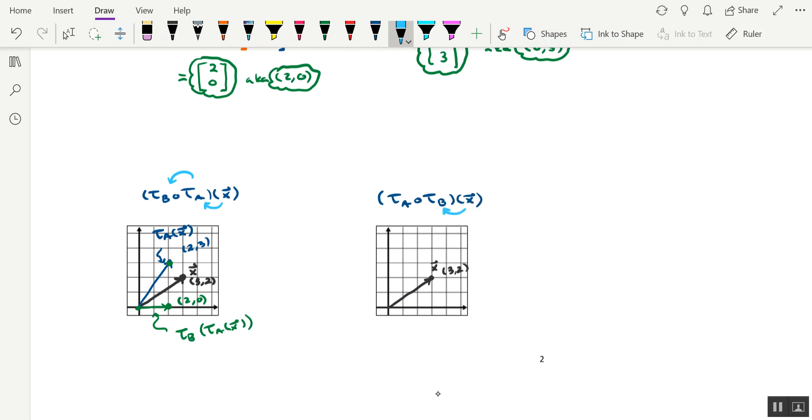The first transformation to take place is capital T sub B, which is an orthogonal projection onto the x-axis. So we're going to take this point right here and basically body slam it down onto the x-axis. That's at 3 comma 0 right now. And this is what the vector would look like. And that vector corresponds to T sub B of x.